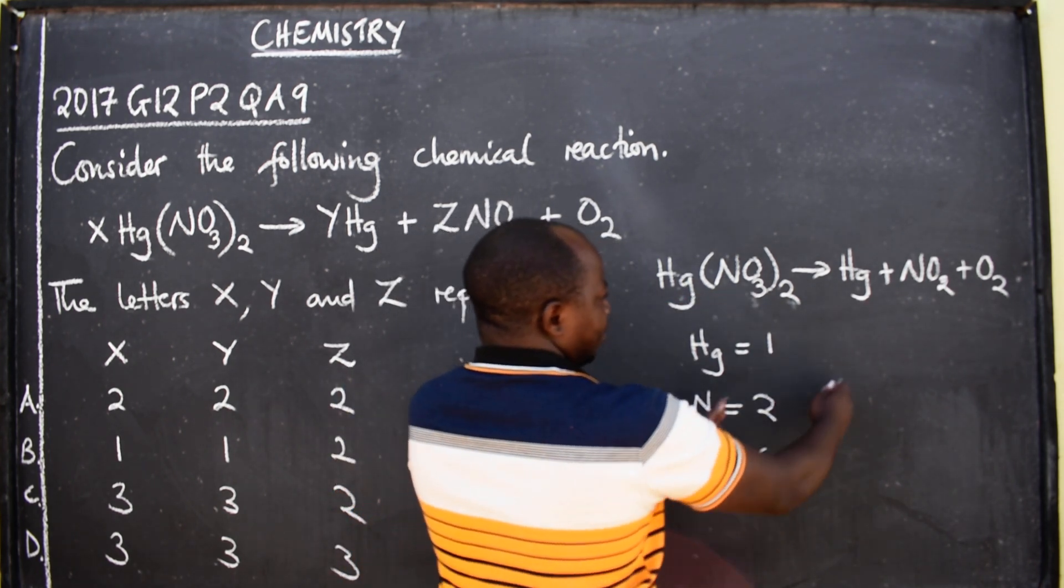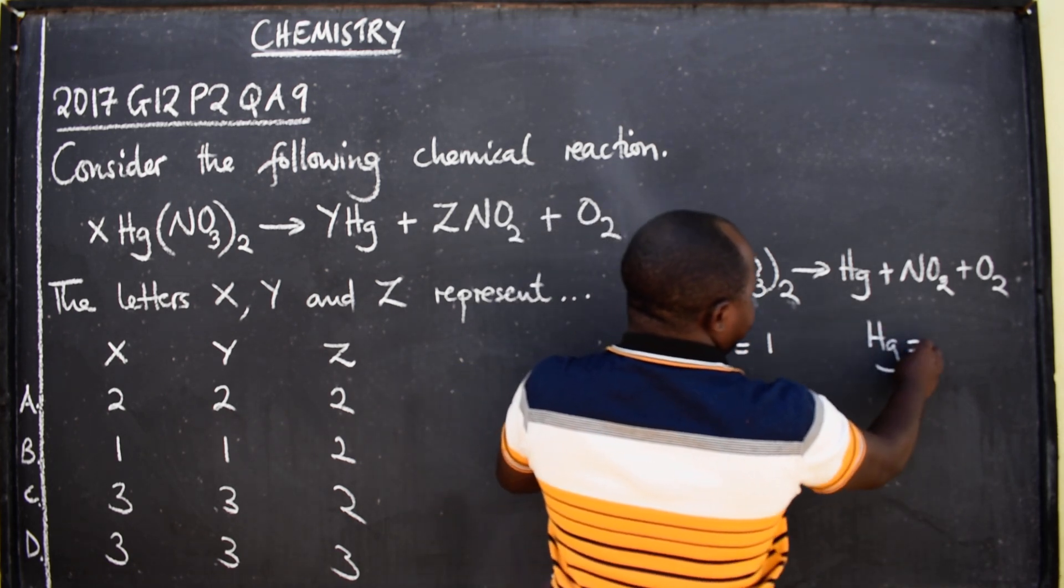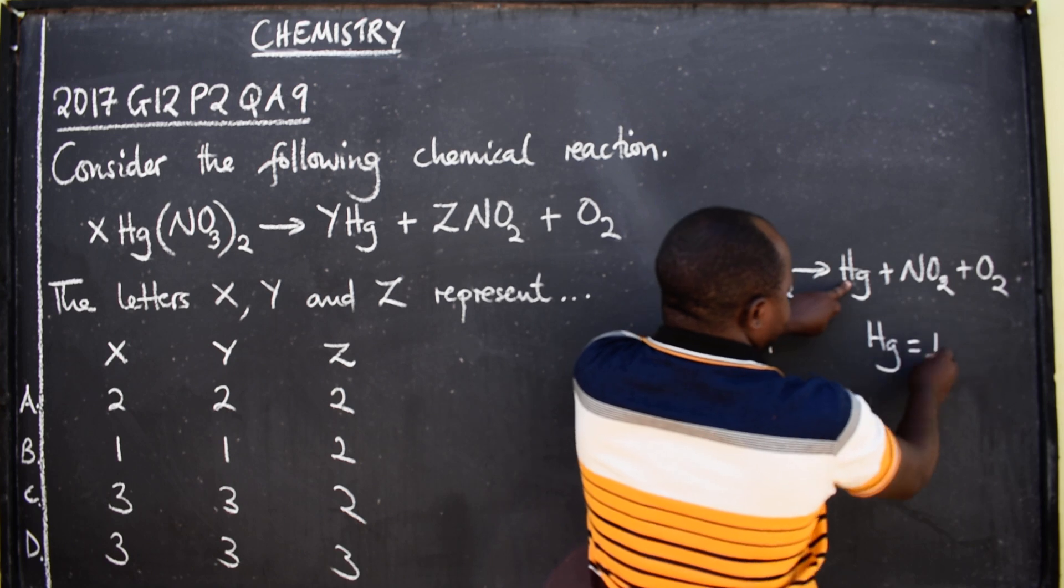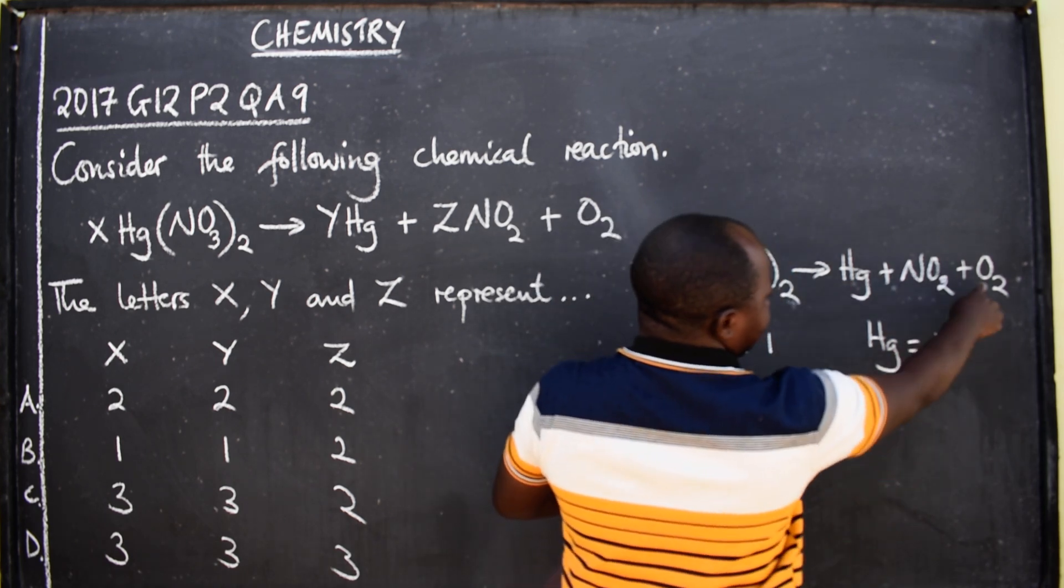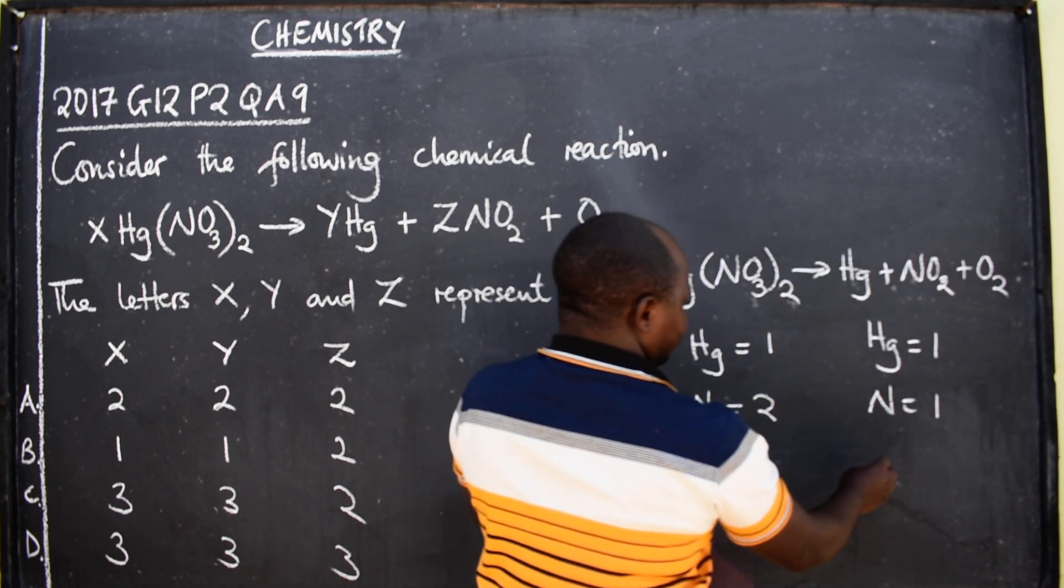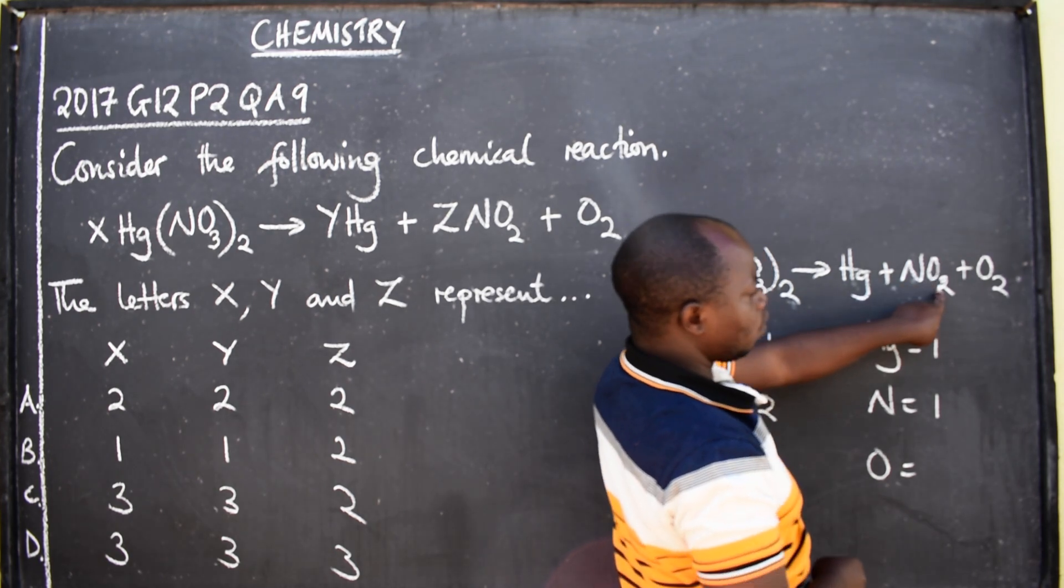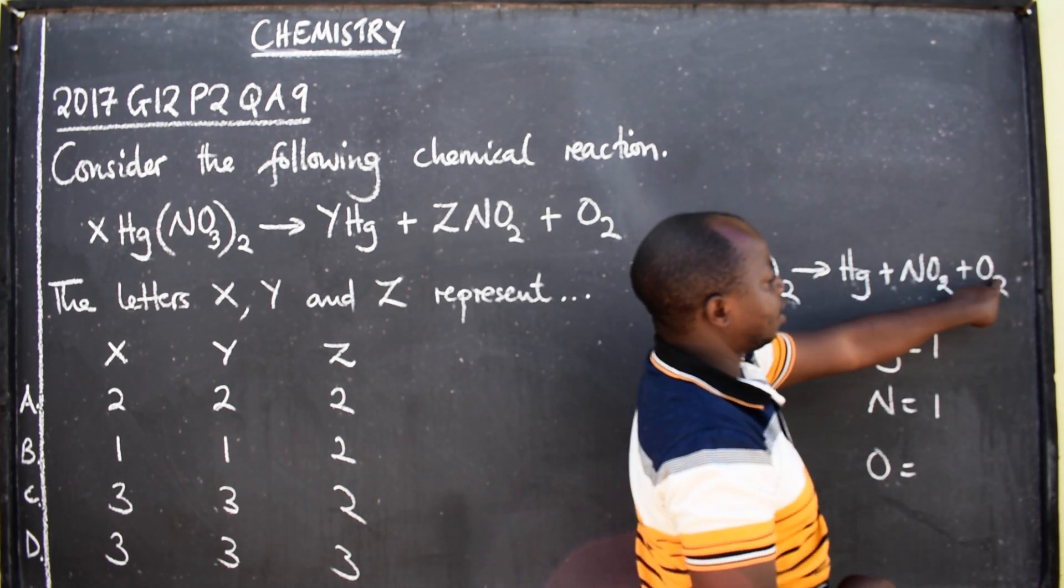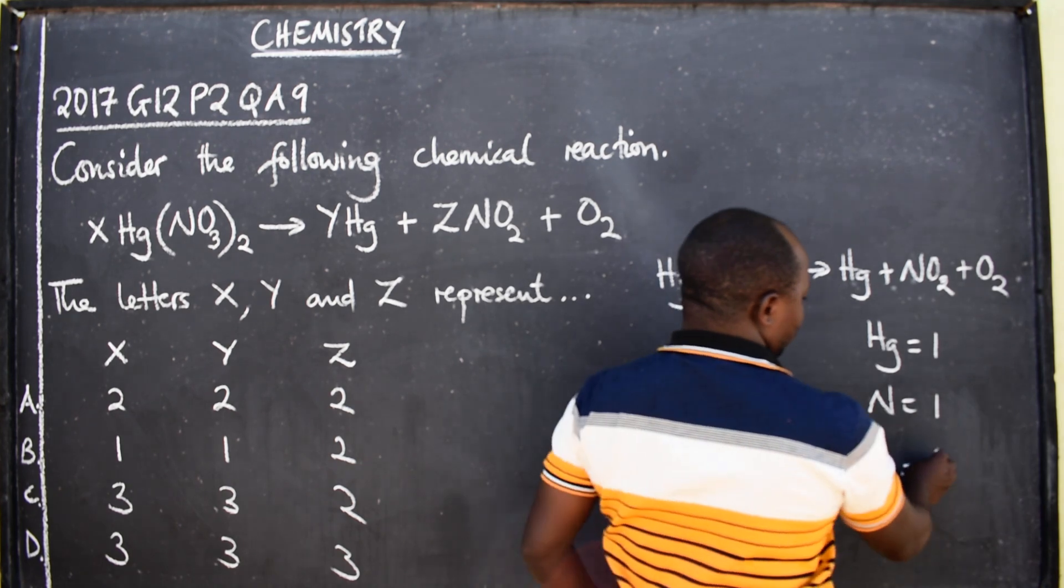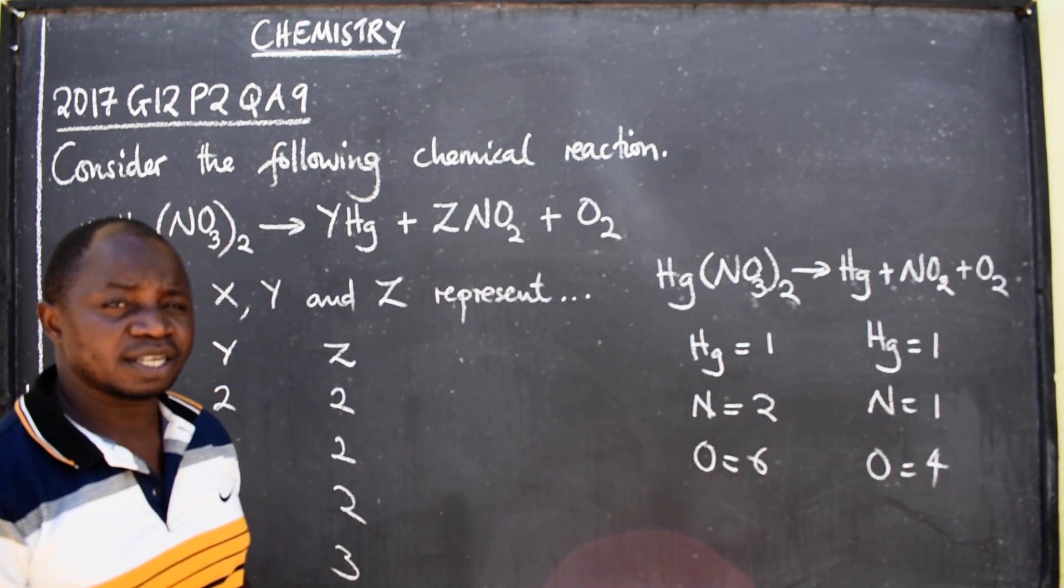On the other side, we have mercury - one, nitrogen - one. We have oxygen: two plus two making it four. So you can see that the chemical equation is not balanced. Mercury one-one, nitrogen two-one, oxygen six-four.